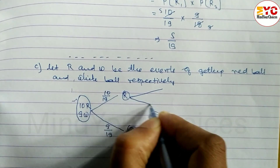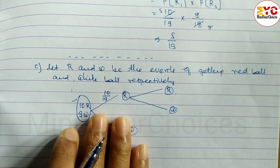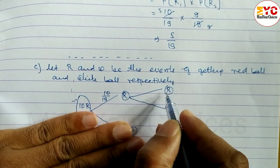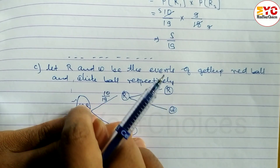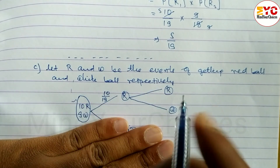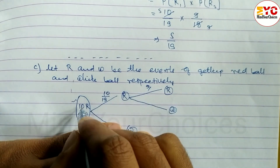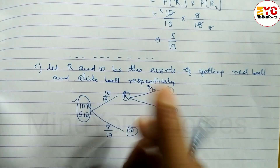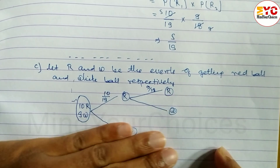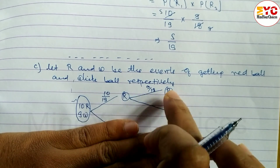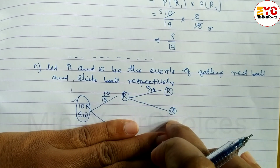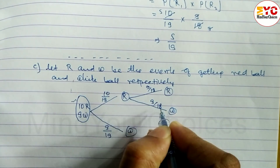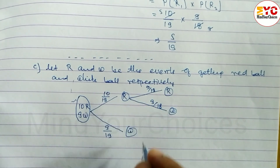If the first ball is red, for the second draw the total decreases. If the second ball is also red, probability is 9/18. If the second ball is white, probability is 9/18.